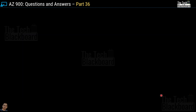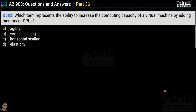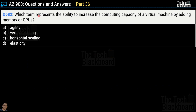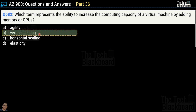Question number 682: which term represents the ability to increase the computing capacity of a virtual machine by adding memory or CPUs? The options are Agility, Vertical Scaling, Horizontal Scaling, and Elasticity. The correct answer is Option B, Vertical Scaling.